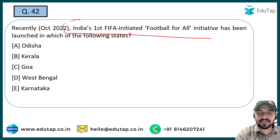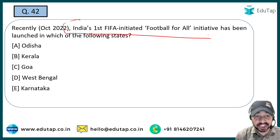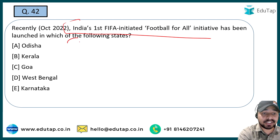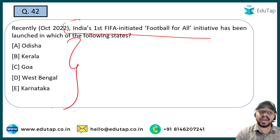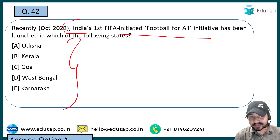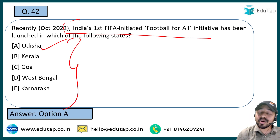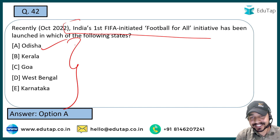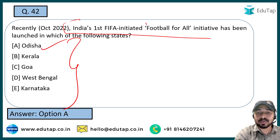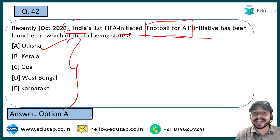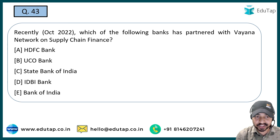The next question: India's first FIFA-initiated Football for All initiative — which state launched it? A very easy answer — that is Odisha. The Odisha government basically launched this Football for All initiative, and this is India's first FIFA-initiated initiative.